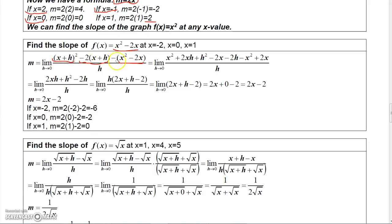If we square this, we get x squared plus 2xh plus h squared. If we distribute the minus 2, we get minus 2x minus 2h, which is these two terms. And if we distribute the minus through here, we get minus x squared plus 2x. Now the 2x and minus 2x cancel, and the minus x squared and x squared cancel. So I'm left with 2xh plus h squared minus 2h on top, all divided by h.